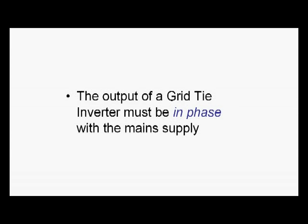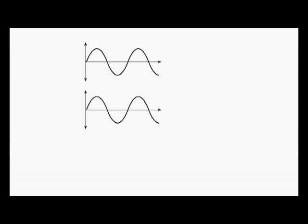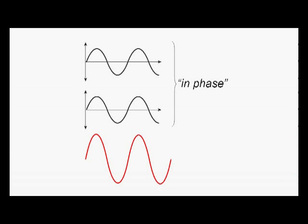Phase matching: the output of a grid tie inverter must be in phase with the main supply. What does 'in phase' mean? If we look at two sine waves here, we can see that they both head up at the same time in their cycle and they head down at about the same time — they're said to be 'in phase.' If those were both electrical supplies and we added them together, the result would be a third sine wave bigger than the first two. We've added one plus one and ended up with two — this is a good thing.